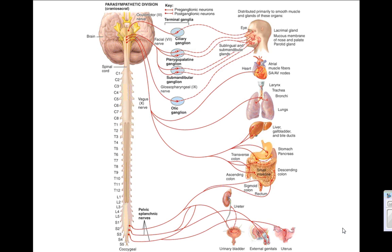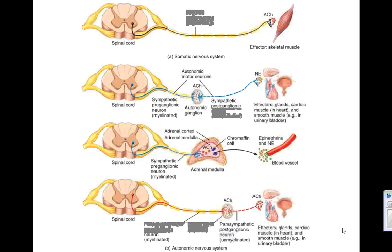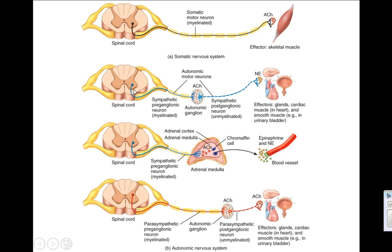Going back a couple slides, acetylcholine is released by the first neuron no matter what. Acetylcholine is released by pre-ganglionic neurons for the sympathetic that innervate post-ganglionic neurons, and also by pre-ganglionic neurons at the adrenal medulla. With the parasympathetic, it's acetylcholine by both the pre and the post.